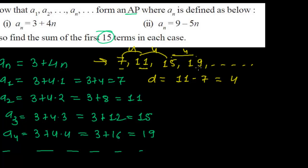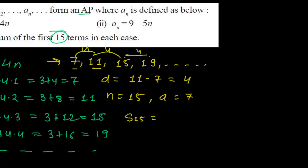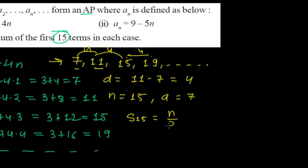Since the difference is constant, I can say this is an arithmetic progression. Now I have to find the sum of the first 15 terms. So n is here 15 and first term is here 7 as we have got. Now I have to find the sum of the 15 terms.